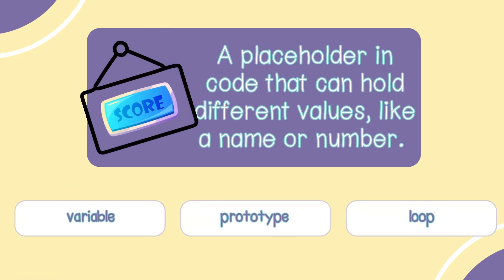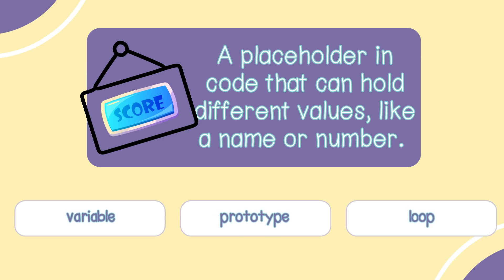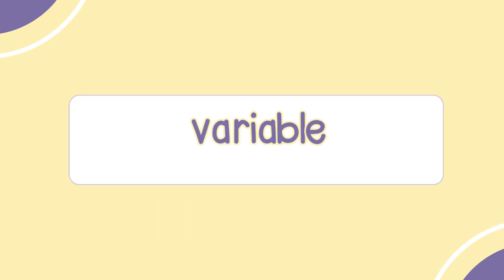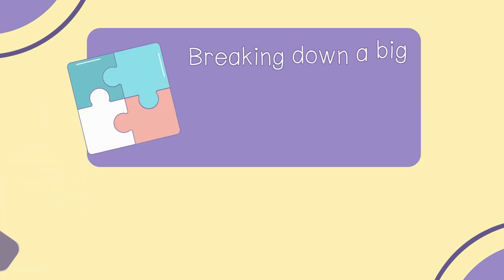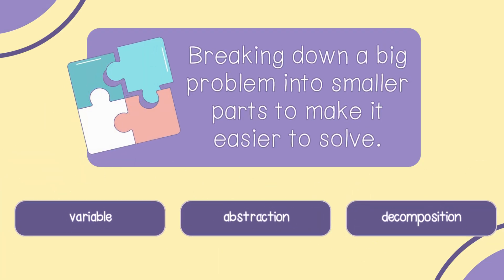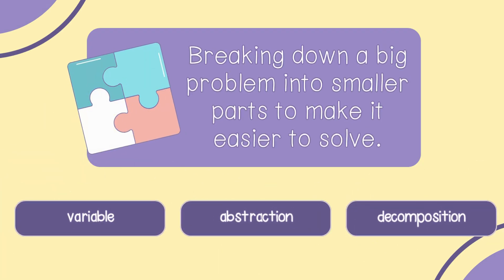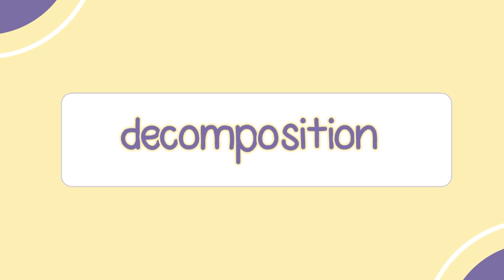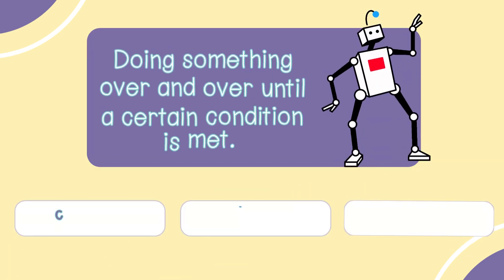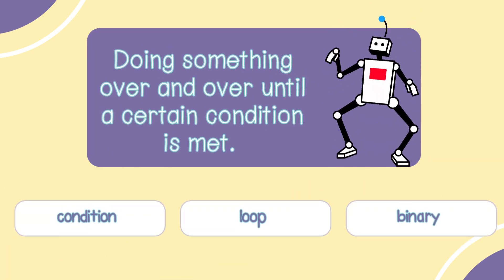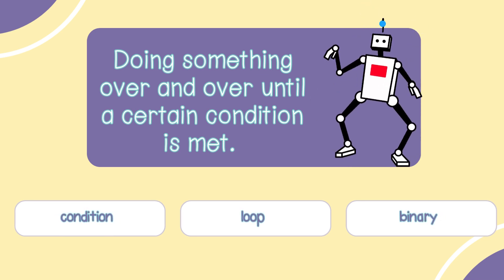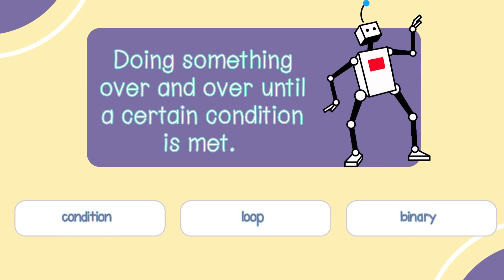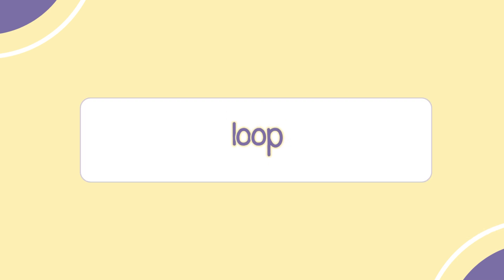A placeholder in code that can hold different values like a name or a number — variable, prototype, or loop? Variable. Breaking down a big problem into smaller parts to make it easier to solve — is that a variable, abstraction, or decomposition? The answer is decomposition. Doing something over and over until a certain condition is met — is that condition, loop, or binary? The answer is loop.